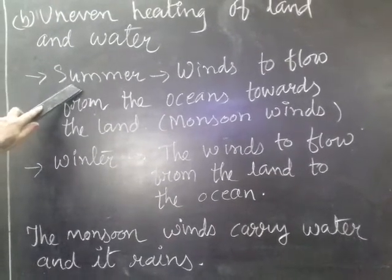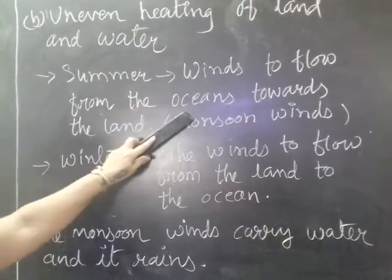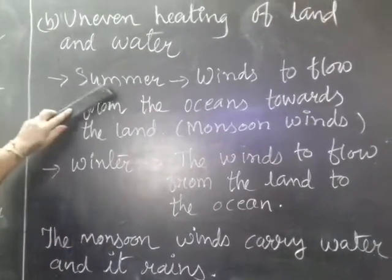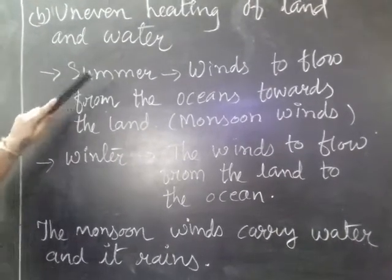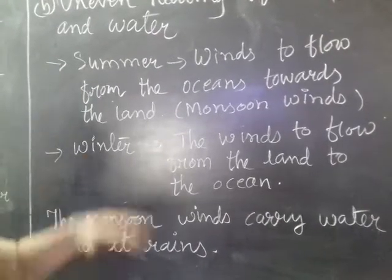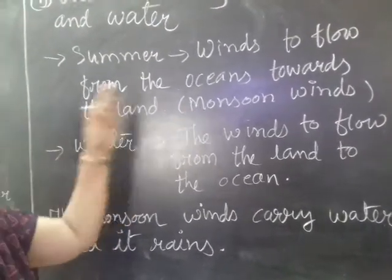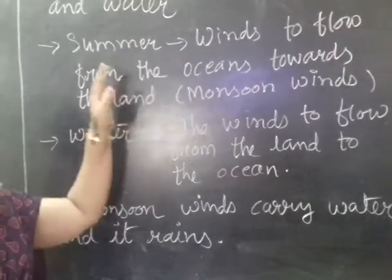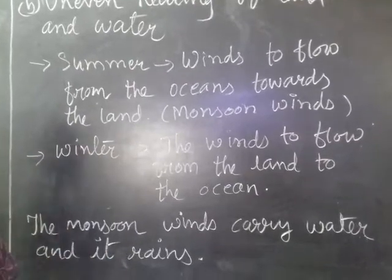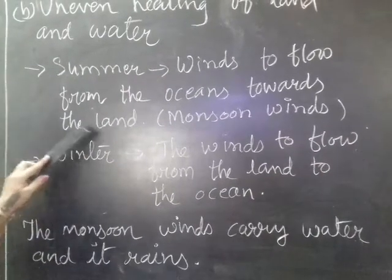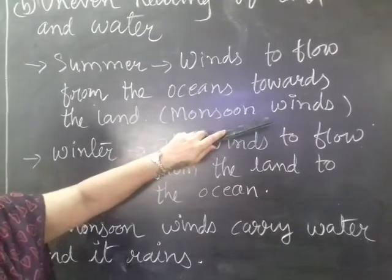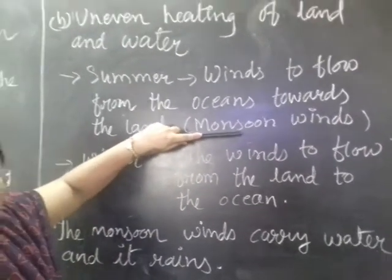So here, during the summer, winds flow from the oceans towards the land. That means during the summer, land heats up faster and so the air on the land will heat up and rise up and that place will be taken by the winds blowing from ocean. When wind blows from ocean, it carries water droplets and so monsoon winds generate and monsoon winds are the reason to carry rain.